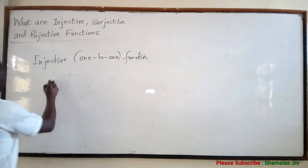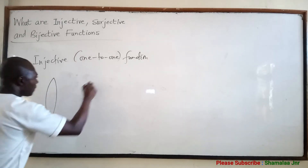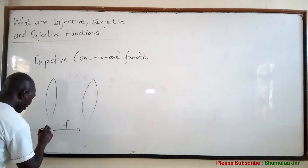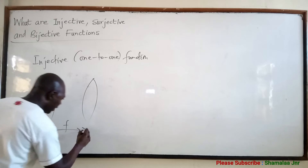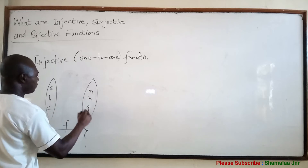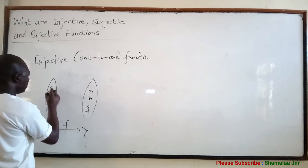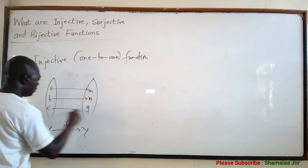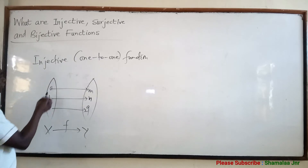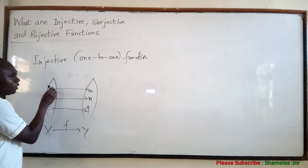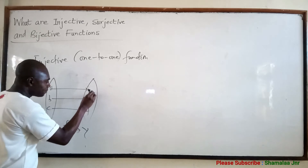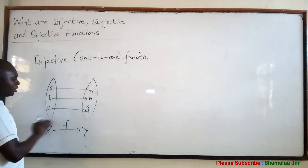So when you have a function F which maps from set S to Y, then you have elements A, B, C in S and M, N, Q in Y. This function is a one-to-one function because every member here is related to a distinct or different member of set Y. So this is the domain and this is the co-domain.